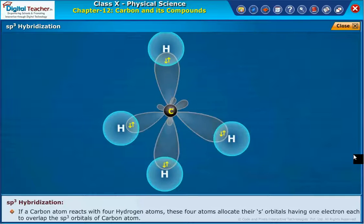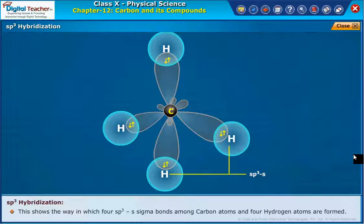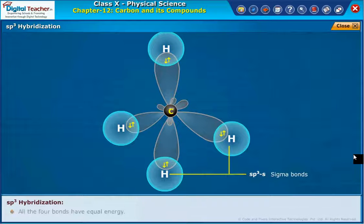If a carbon atom reacts with four hydrogen atoms, these four atoms allocate their S orbitals, having one electron each, to overlap the SP3 orbitals of carbon atom. The SP3 hybridized orbitals are oriented at an angle of 109 degrees. This shows the way in which four SP3-S sigma bonds among carbon atoms and four hydrogen atoms are formed. All four bonds have equal energy.